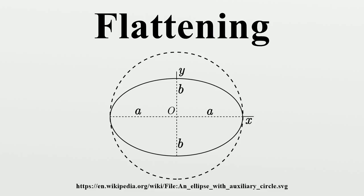Numerical values for planets: for the WGS 84 ellipsoid to model Earth, the defining values are A = 6,378,137.0 meters and 1/f = 298.257,223,563, from which one derives B = 6,356,752.3142 meters, so that the difference of the major and minor semi-axes is 21.385 kilometers.